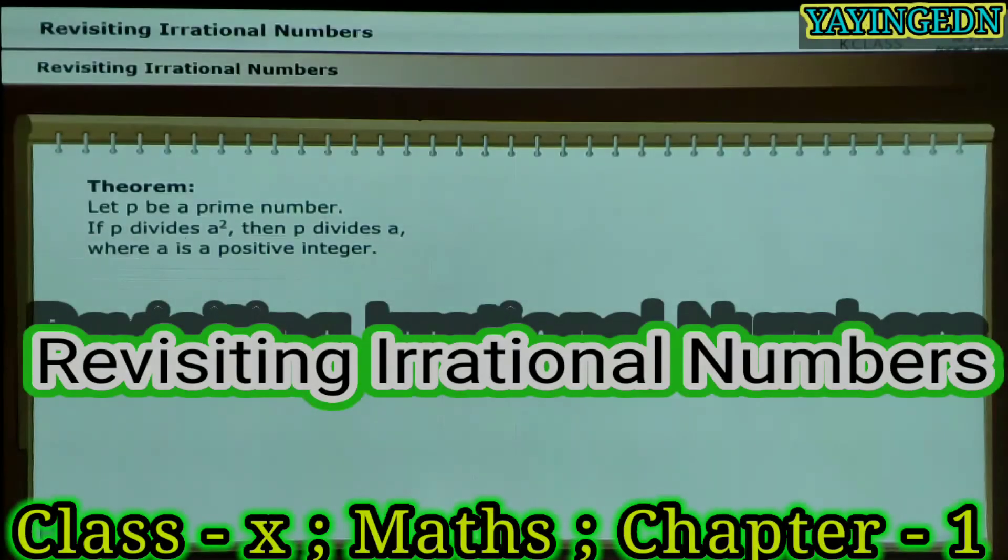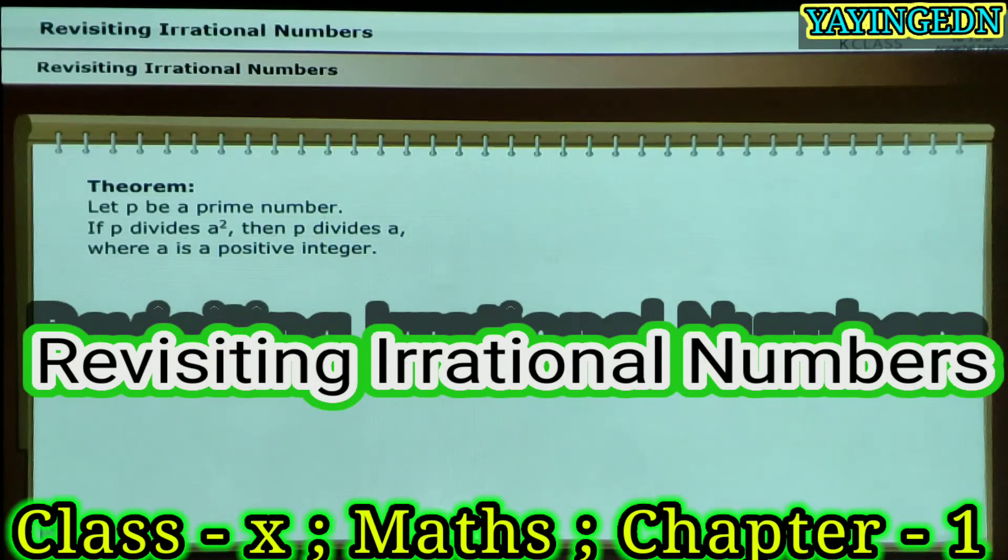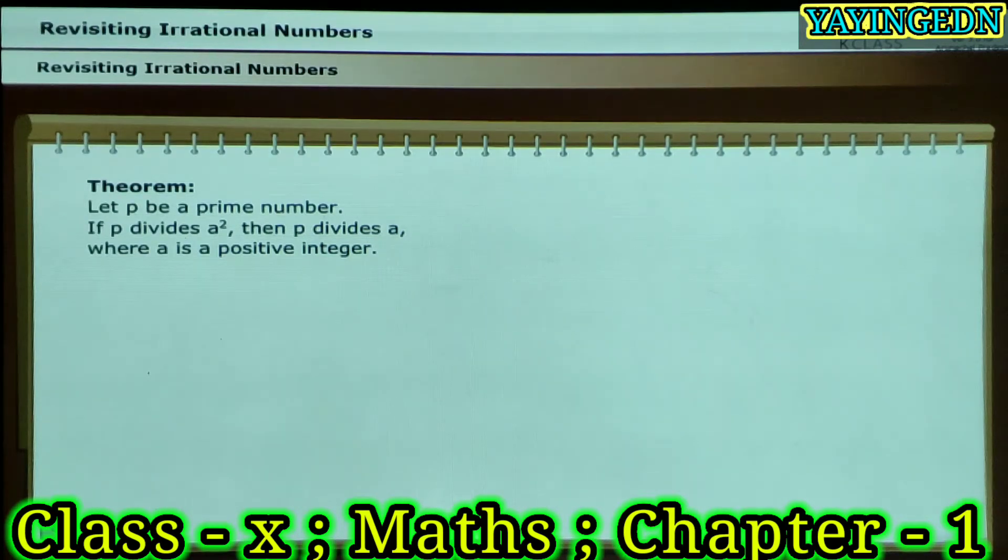In this lesson, we shall prove the following theorem, which states that, let P be a prime number. If P divides A squared, then P divides A, where A is a positive integer.